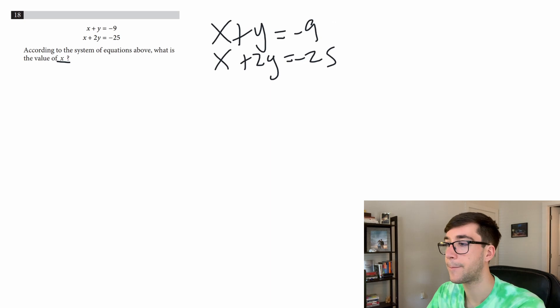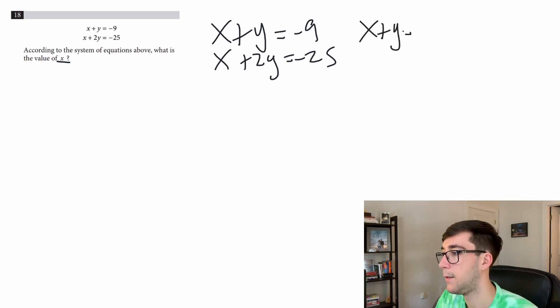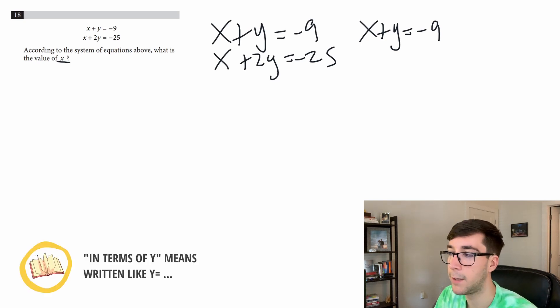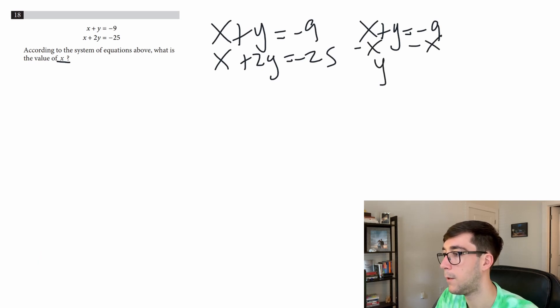Let's use this equation up here because it has one x, one y, it's going to be a little easier to manipulate. I'll take it over here, we've got x plus y equals negative 9 and I'm going to write this in terms of y. This will allow me to plug it in and replace y in the other equation. So I'll subtract x from both sides to do that and we have y equals negative 9 minus x. So now in the second equation instead of y I can plug in negative 9 minus x because we know that's what y equals. So we'll write x plus 2 times not y but negative 9 minus x equals negative 25.